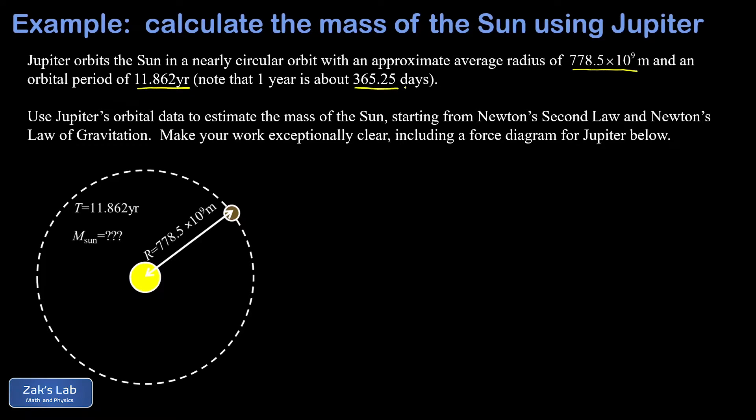The extra quarter day is what results in the leap year. So the first thing I'm going to do is compute that orbital period in seconds so we're using SI units. We start with 11.862 years and do some unit analysis: one year for every 365.25 days, one day for every 24 hours, and an hour has 60 minutes but every minute has 60 seconds, that's a total of 3600 seconds for every hour. Our units cancel nicely and I'm left with 3.743 times 10 to the eighth seconds.